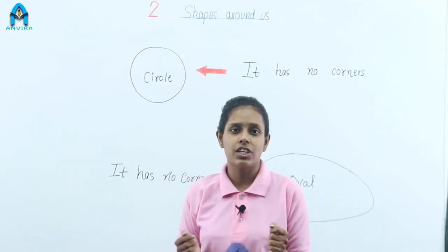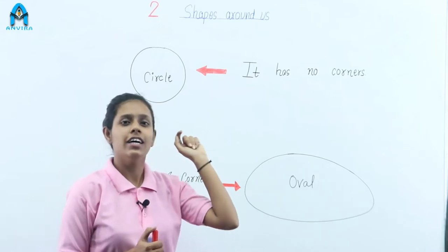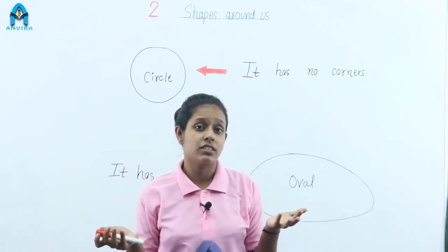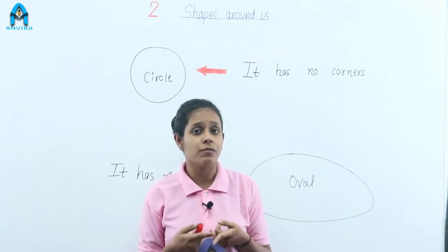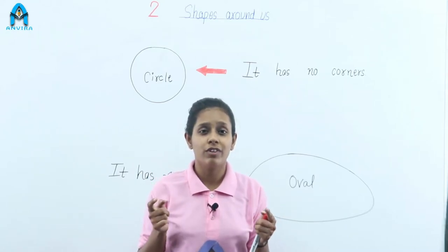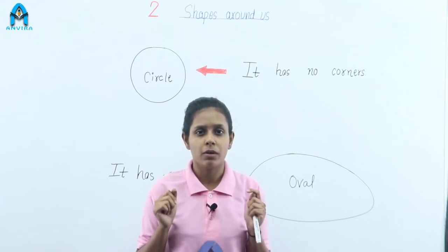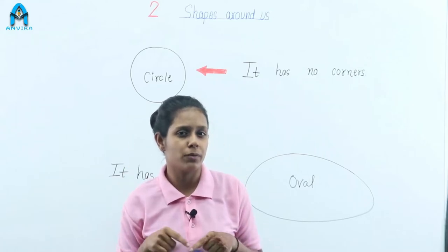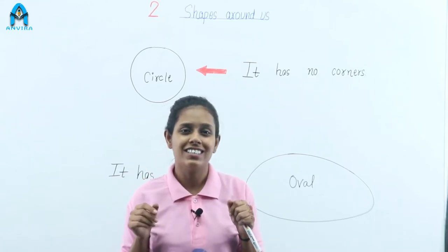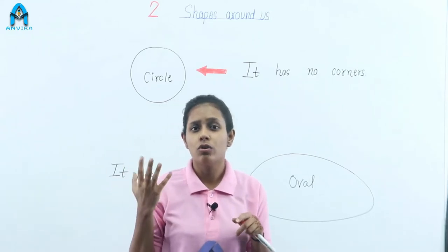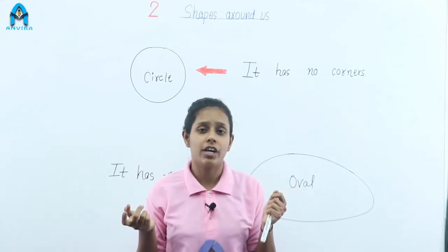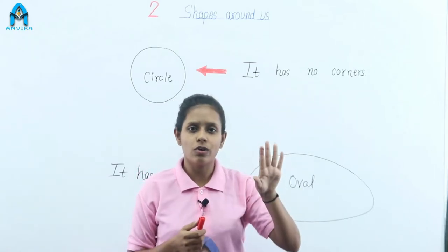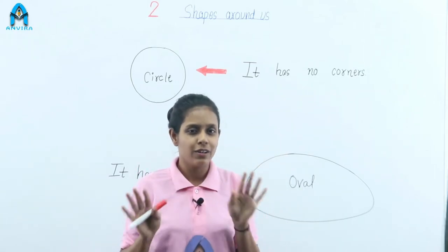Our next shape is a circle. Many objects around us have the shape of a circle. We eat chapati — the shape of chapati is a circle. We see the moon and the sun — all round shapes are circles. A circle has no corners.